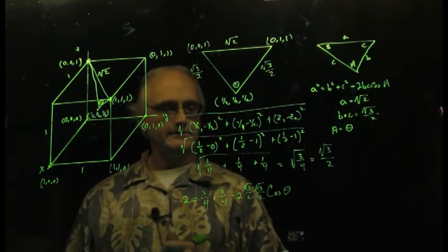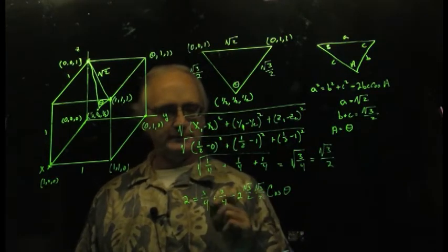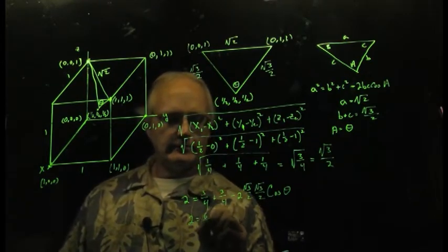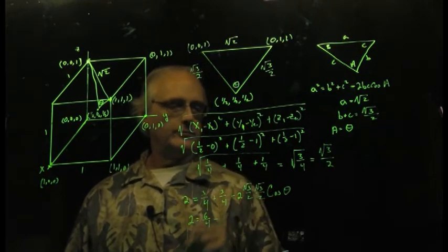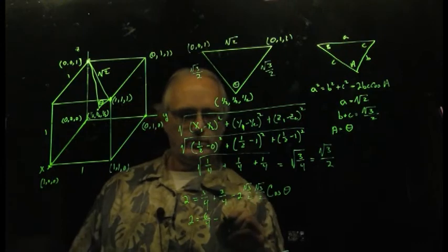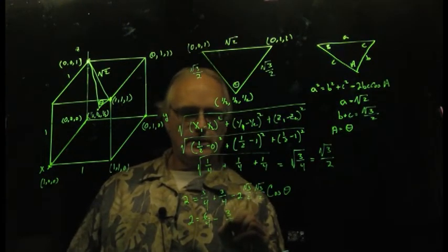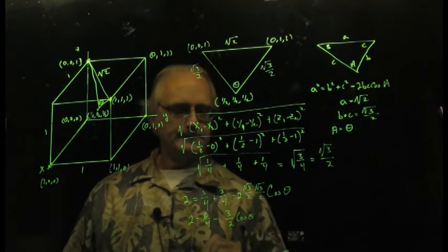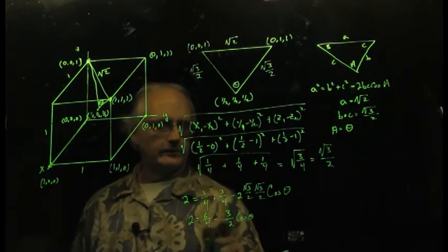So, do a little bit of rearranging in here for a moment. Six-fourths minus, and then this one here, multiply that, that's going to be 3 over 4, and with the 3 over 4, 2 cancel, 3 halves cosine theta.